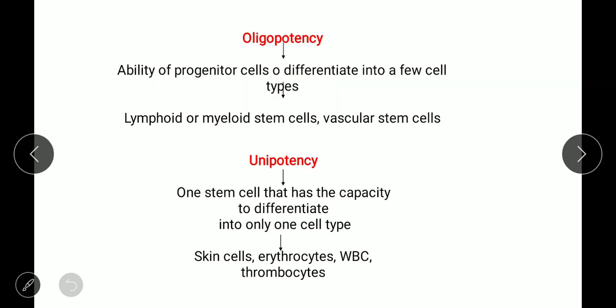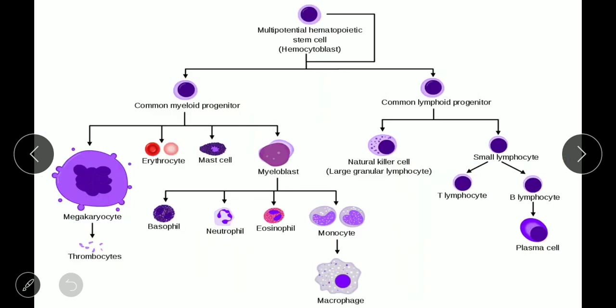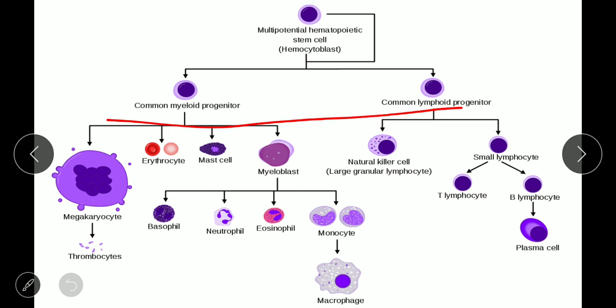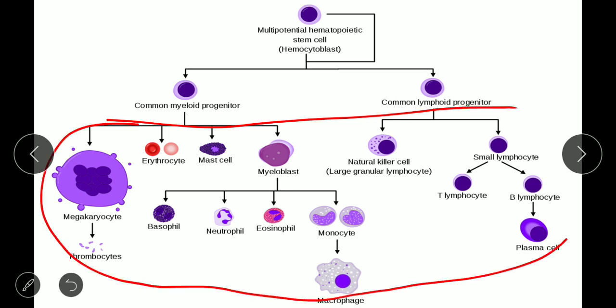Unipotency is when one stem cell has the capacity to differentiate into only one cell type. For example, skin cells form epidermal cells, erythrocytes form RBCs, WBCs form leukocytes, and thrombocytes form blood platelets. T cells can form B cells. These are all examples of unipotent stem cells.